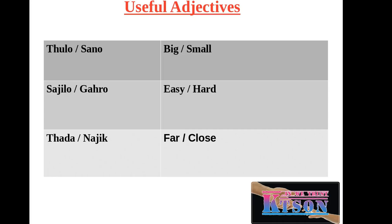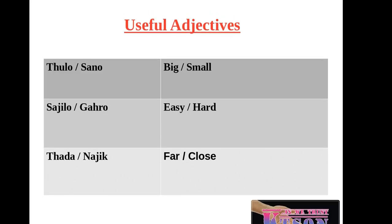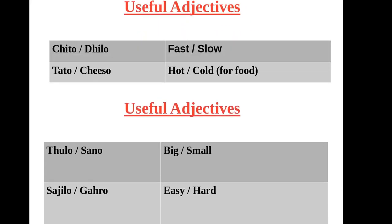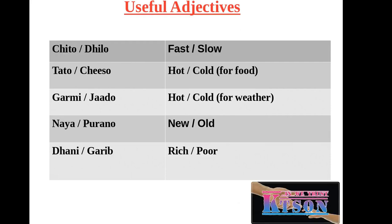Thulo means big, sano means small. Sajilo means easy, garo means difficult. Par means far, najik means near or close.